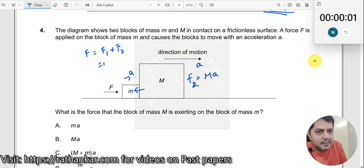F1 is nothing but m into A and this is nothing but capital M into A. So together when I write this across, I can now write this as (m + M) into A. Which is very clear. Total force applied is equal to total mass multiplied by acceleration.